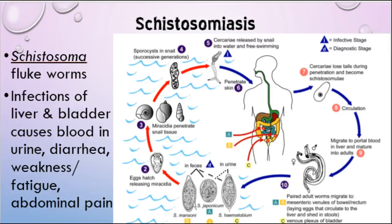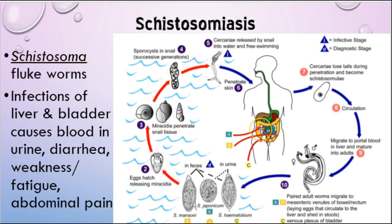Another common one is Schistosoma, which is a type of fluke worm that infects the liver and the bladder. It has a snail vector that lives in the water where it can start to develop, and then when you swim in that water it's actually able to get in — it literally goes through your skin and into your blood, from there into your liver and into your bladder. Some of these things are definitely not fun to have.